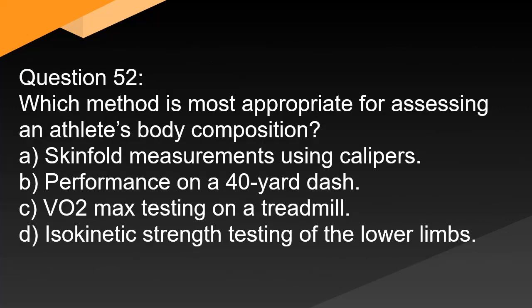Question 52: Which method is most appropriate for assessing an athlete's body composition? A. Skinfold measurements using calipers. B. Performance on a 40-yard dash. C. VO2max testing on a treadmill. D. Isokinetic strength testing on the lower limbs. Correct answer: A. Skinfold measurements using calipers are a common and practical method for assessing body composition, estimating body fat percentage.